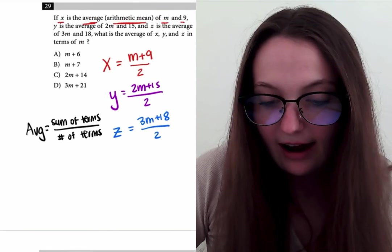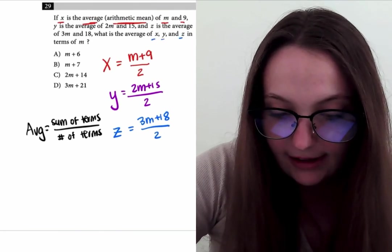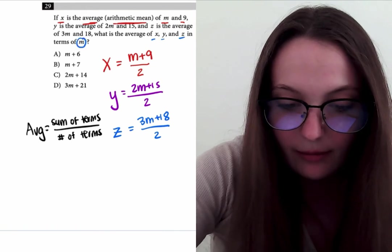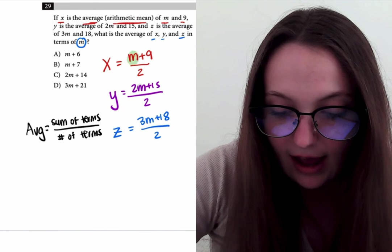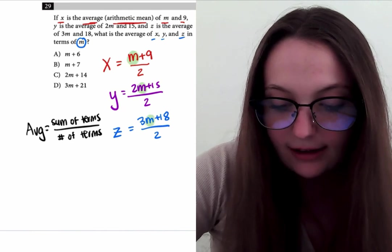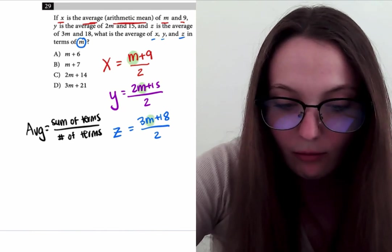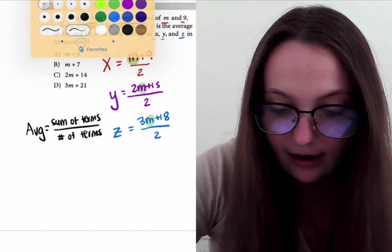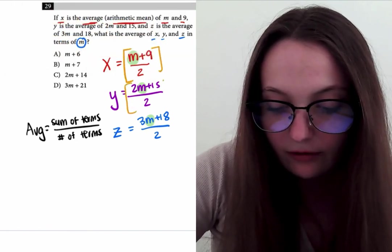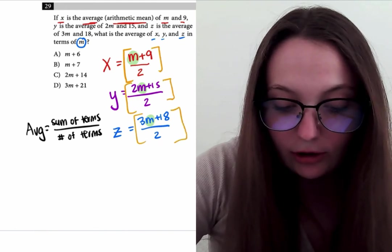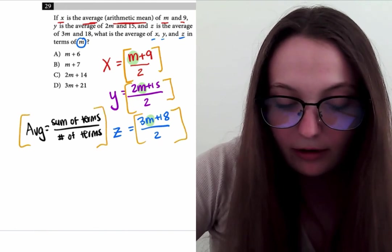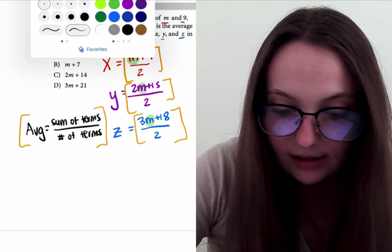Now they want to know what the average is of X, Y, and Z in terms of M. So if they want us to represent it in terms of M, we want to realize that M is in what X, Y, and Z are equal to. So we're going to want to add everything that I am bracketing right now in orange. We're going to add all of these together so we can represent it in terms of M. We're just going to keep in mind what the average formula is and stay true or consistent to that.